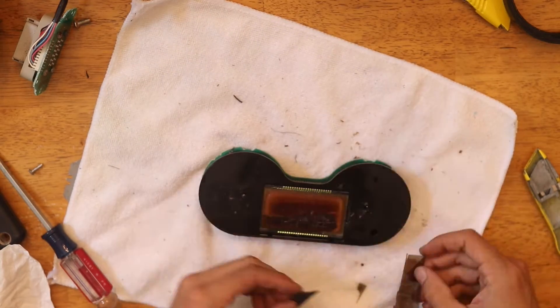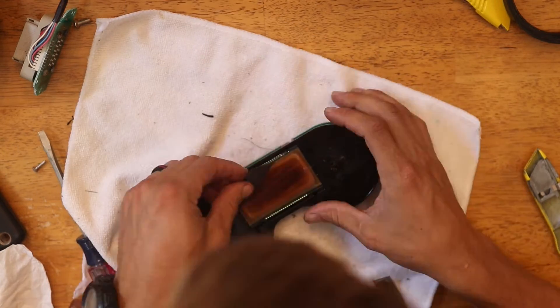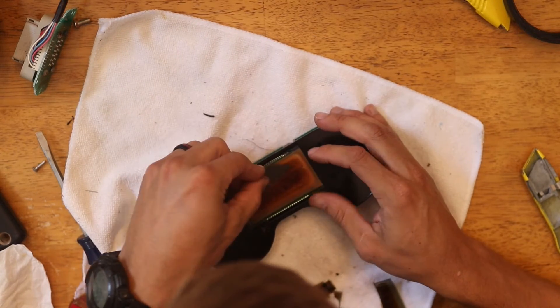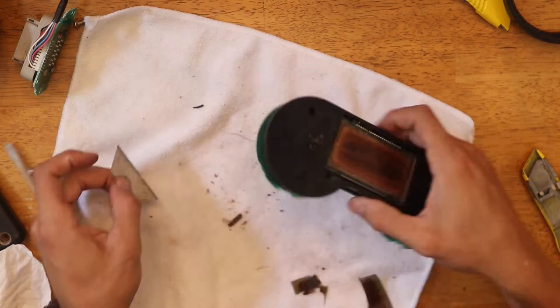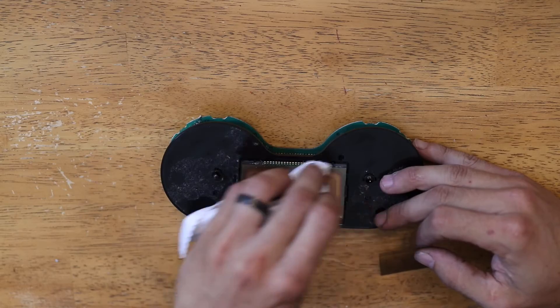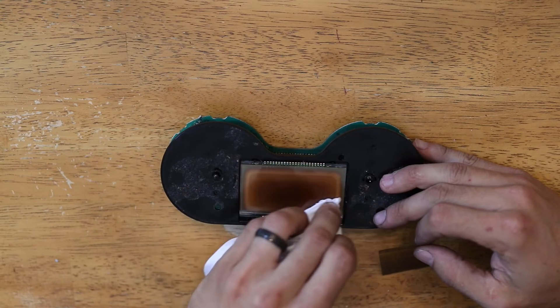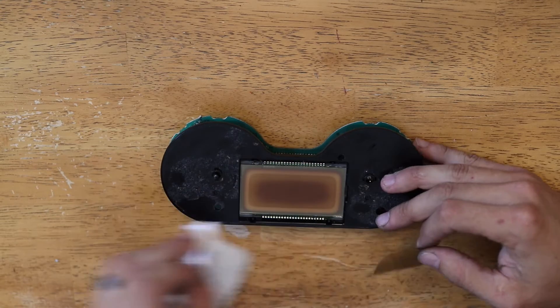Here's the fun part, removing the old polarizer. Simply use a new razor blade parallel to the glass and scrape the old one off. It will take quite a bit of time and maybe some glass cleaner to finally get the glass as clean as you need it to be to apply the new polarizer.